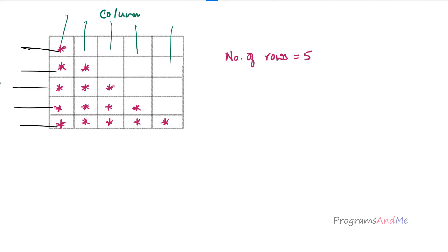Here the number of rows of this pattern is 5 — we can see 5 rows. We are not asking about the columns from the user because the columns in this pattern are dependent on the row. Since columns depend on the row, there is no need to take the number of columns from the user; we only need the number of rows.